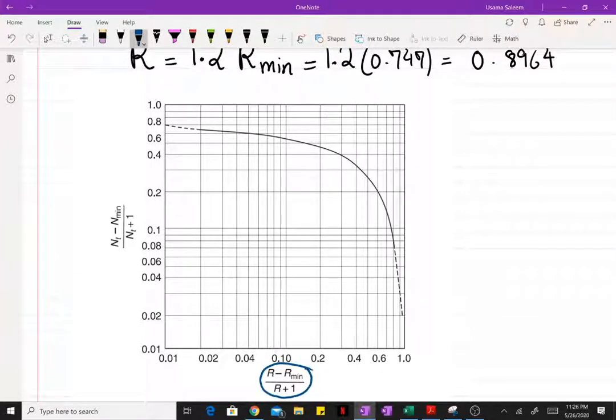So for our purpose, the x-axis, once you know the value of the x-axis, you can read off the y-axis and find the number of theoretical stages. So let's say for our case, our x-axis is going to be R minus R_min over R plus 1.